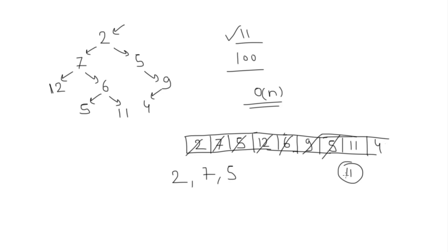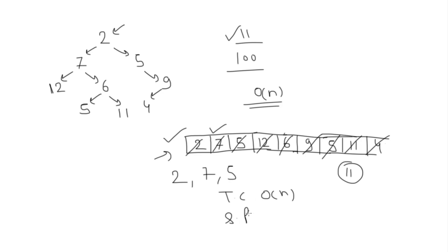When we remove 11 and it matches, we say the value exists in the tree. If we were finding 100, after removing 11 and 4 the queue becomes empty. If the queue is empty and we haven't found the value, we return false — the element doesn't exist. Time complexity is O(n) because we iterate each element one by one. Space complexity is also O(n) because we are using a queue.